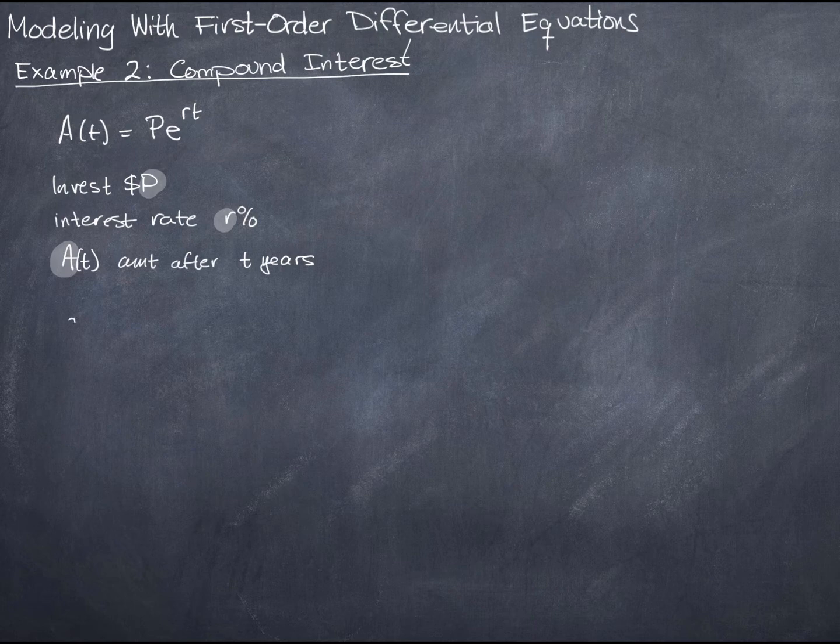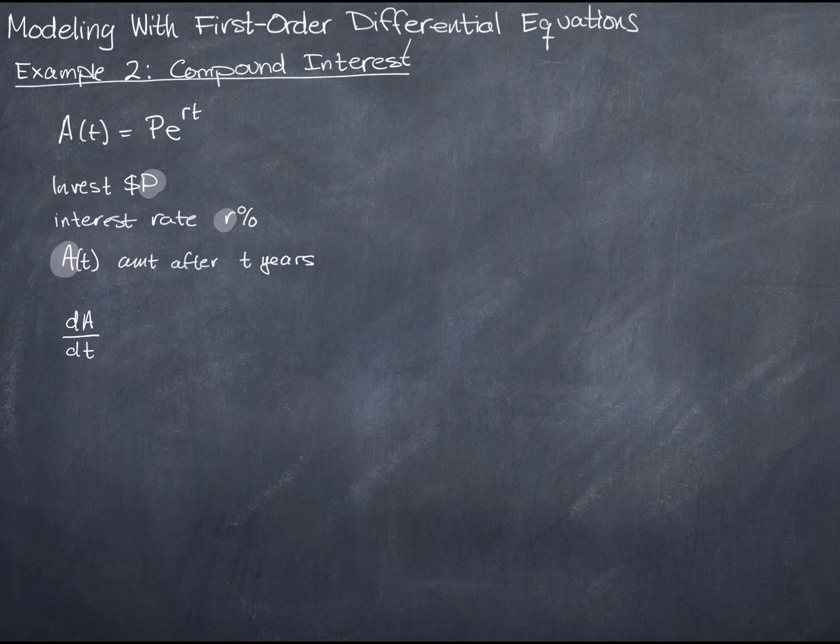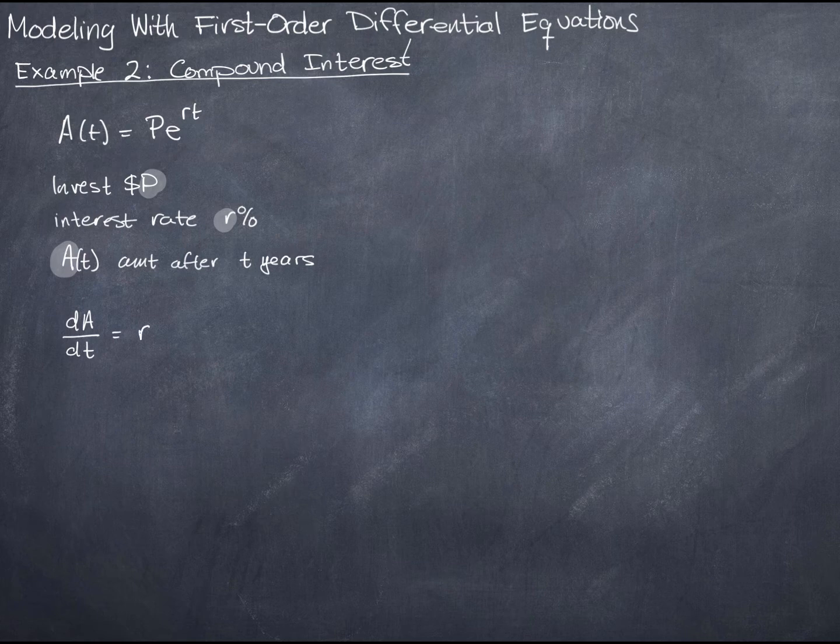What we're interested in here is how the amount in the account is changing over time. So we have a ratio of differentials, and that's going to be equal to the rate times the amount in the account at any given point.